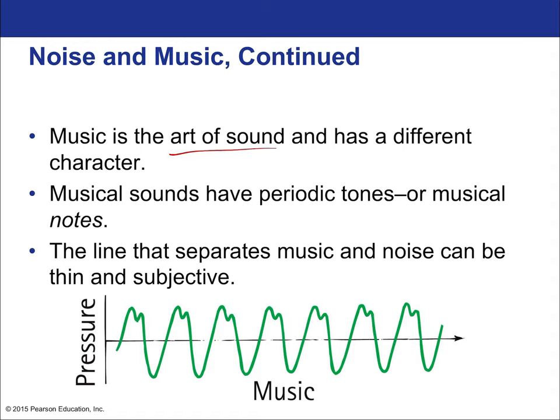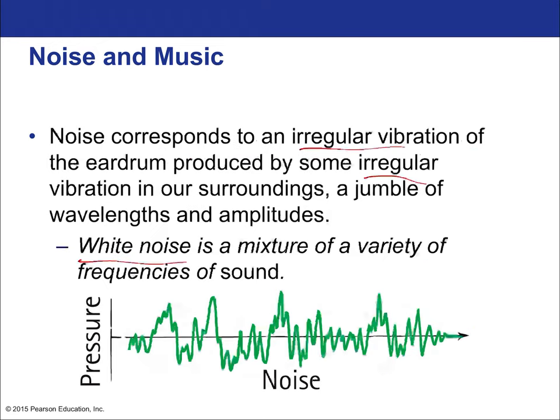Music, on the other hand, is the art of sound — finding the right combinations of frequencies that sound good. It has a very different character. Musical sounds have periodic tones or musical notes; they are composed of either a single frequency or only just a few frequencies that go well together, based on human preference, and it's subjective. Here is an example of a note in music — notice it is a much more predictable pattern as compared to noise.